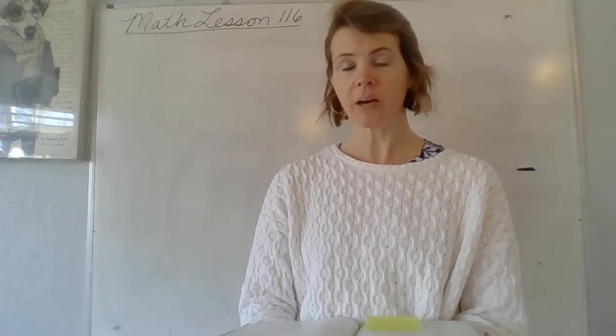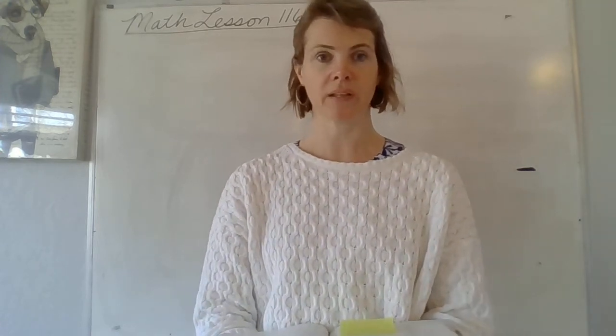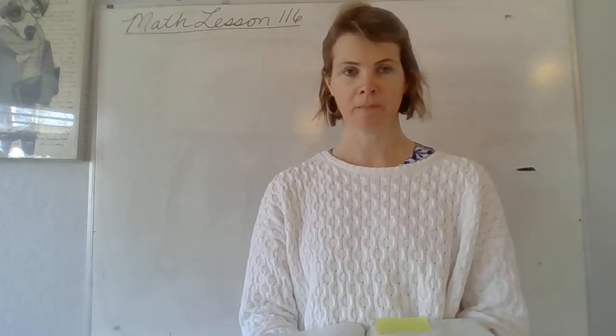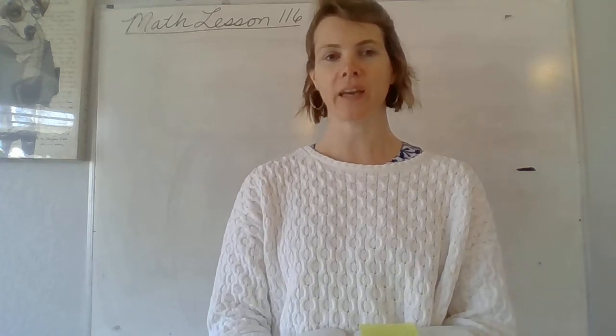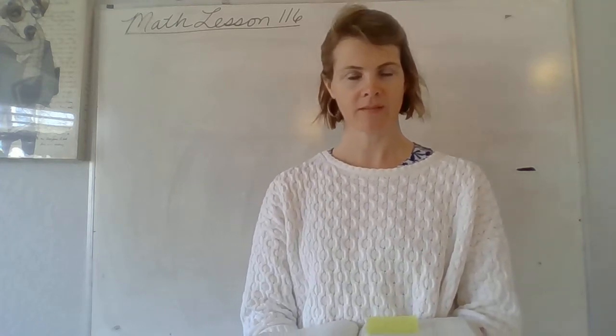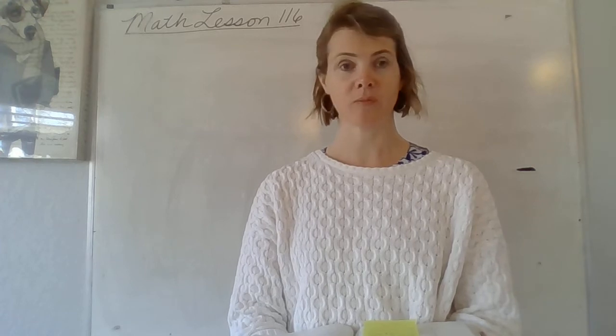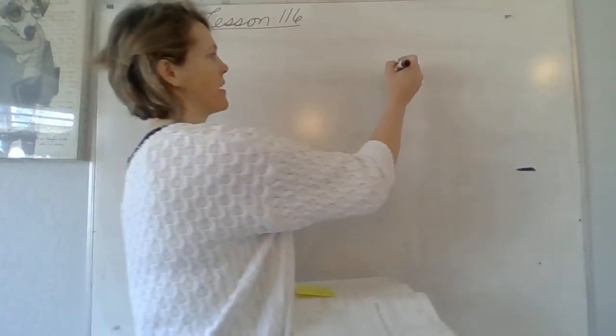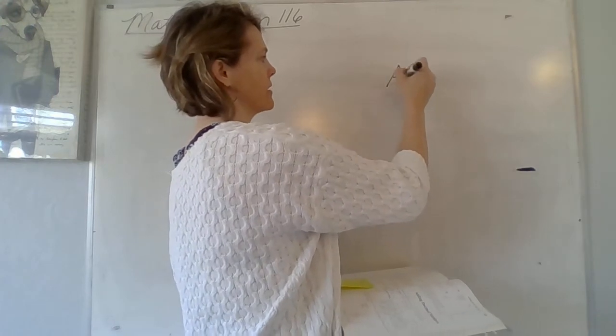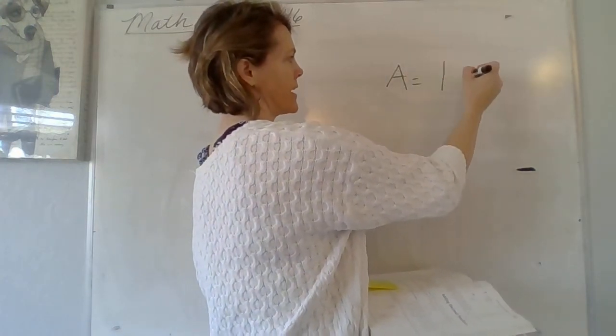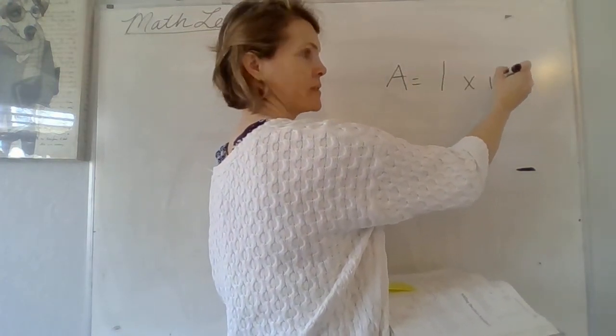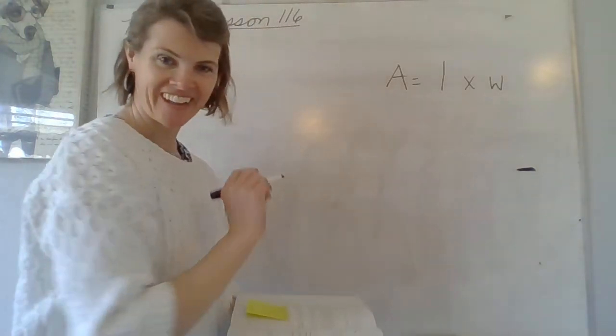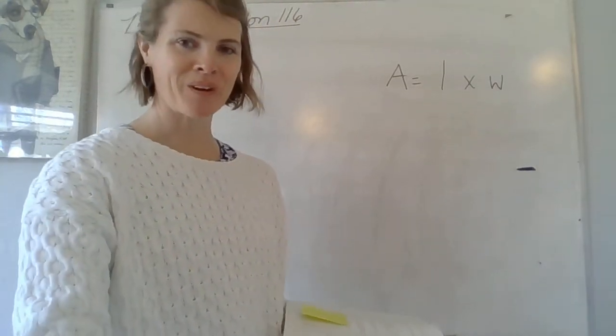Alright, on your whiteboards I would like for you to write down the formula for area. Three, two, one. Words out. To find the area of any quadrilateral, area equals length times width. Got that? Good. Erase your board.